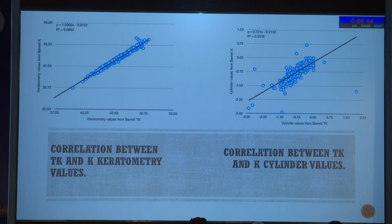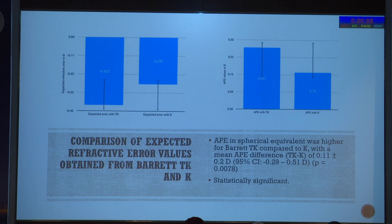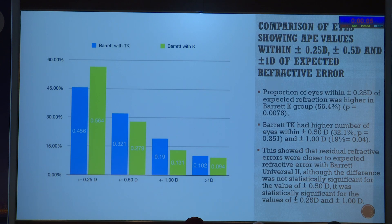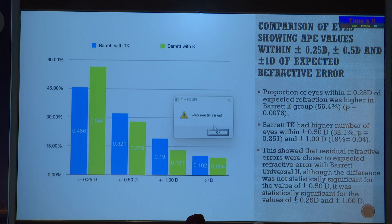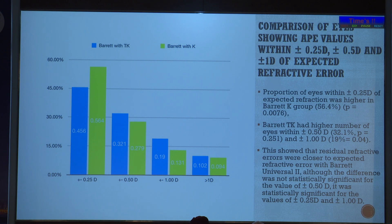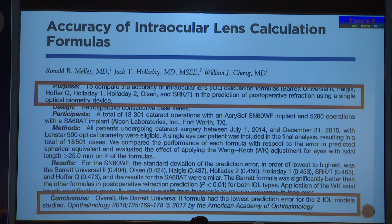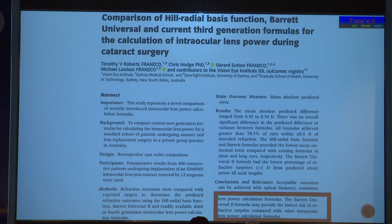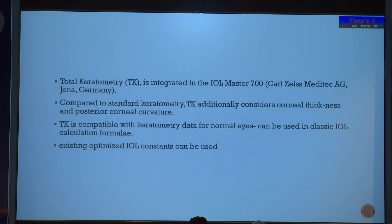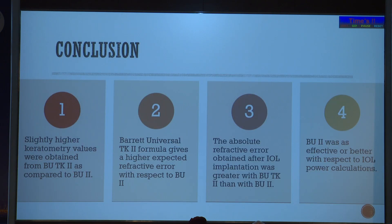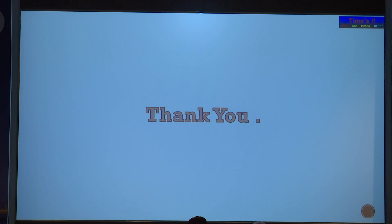On plotting with Bland-Altman comparison charting, there was significant agreement between TK and K values. Sorting by APE — absolute predictive error — the APE was significant at the 0.25 and 1.0 diopter ranges, but not at 0.5 diopters, where TK showed slightly more predictive error. This was also seen in comparison with other formulas by Dr. Melees, but notably we compared Barrett's TK directly with the Universal 2 formula, which had not been done before. We also plan to include the TORIC formula in subsequent work.